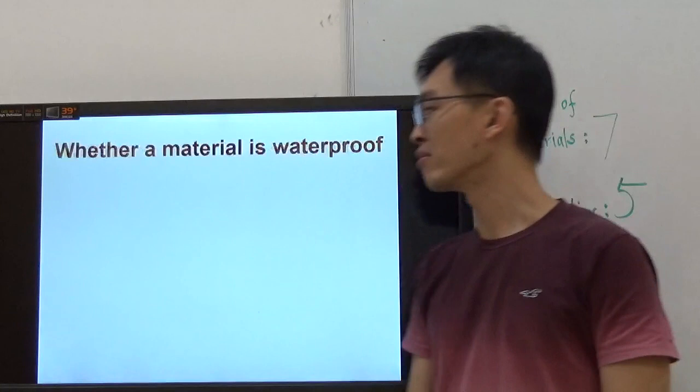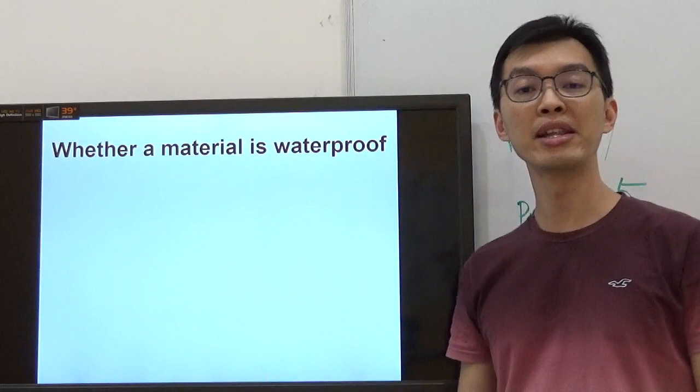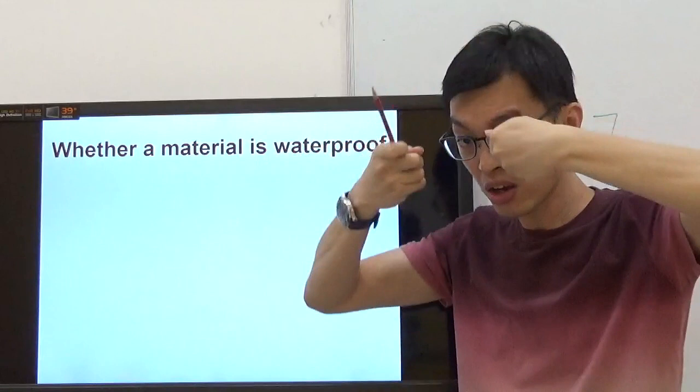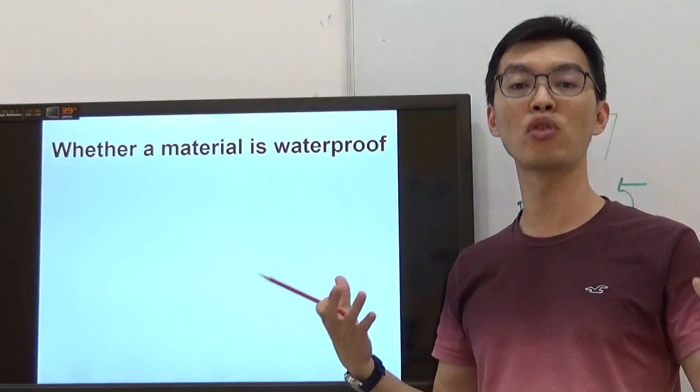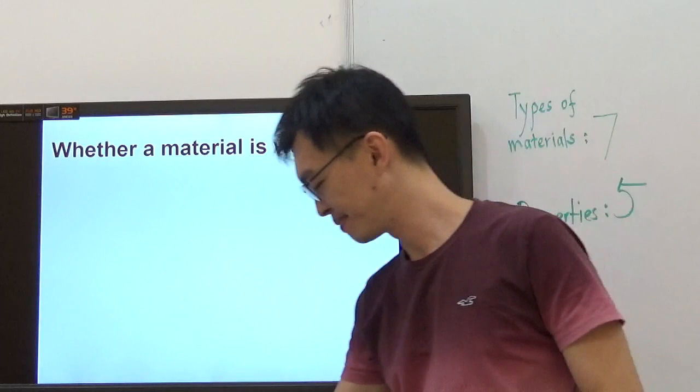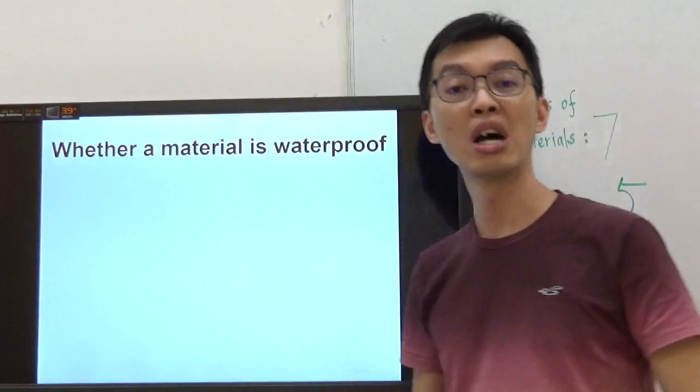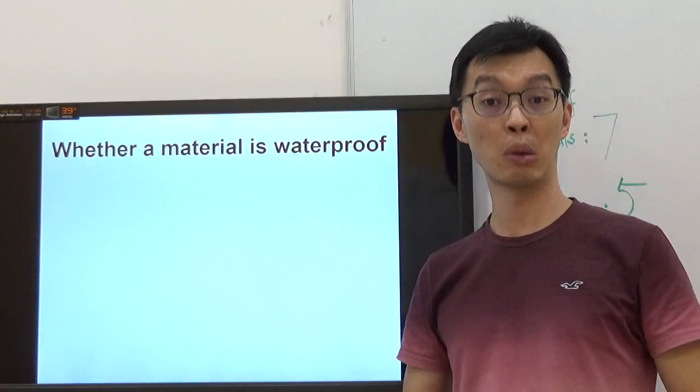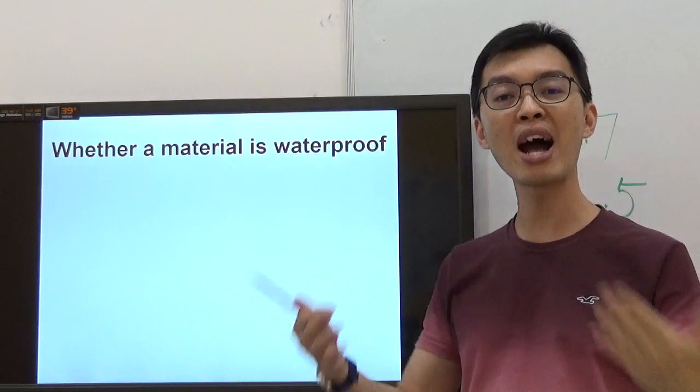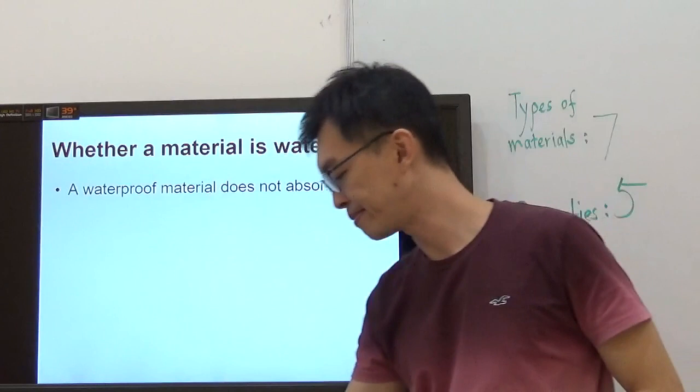Next property: whether a material is waterproof. When it is raining and you're about to go to school, what do you usually carry? Umbrella or a raincoat. Both are waterproof materials, meaning they do not allow water to pass through. When water did not pass through, you remain dry. But when you reach school, there's one part which will be wet: school shoes. Because school shoes are not waterproof, they absorb water. A waterproof material does not absorb water.